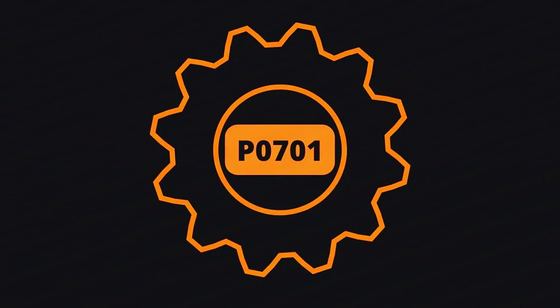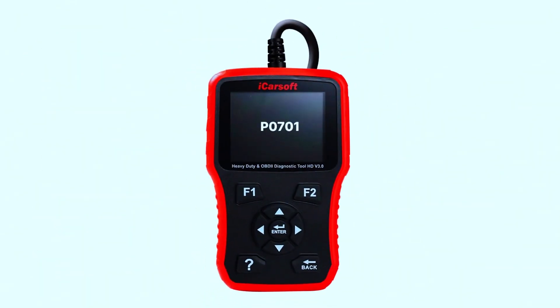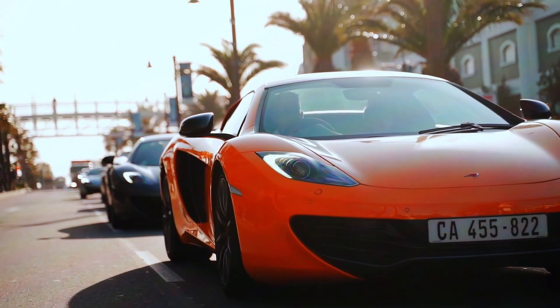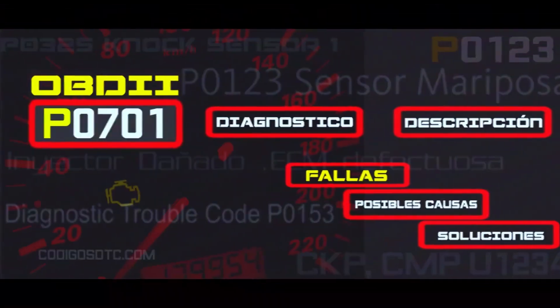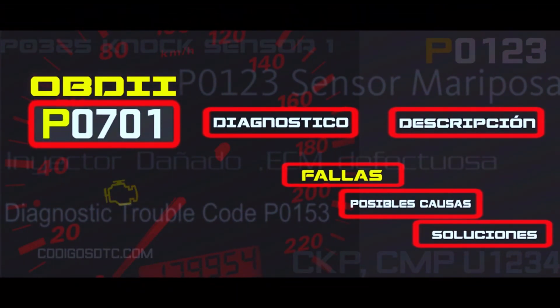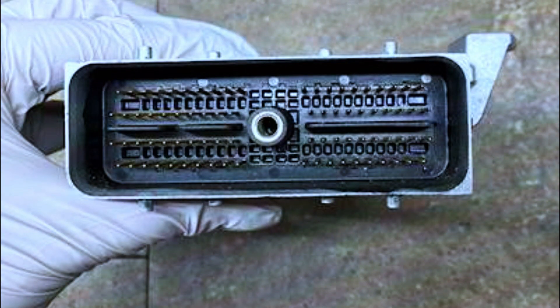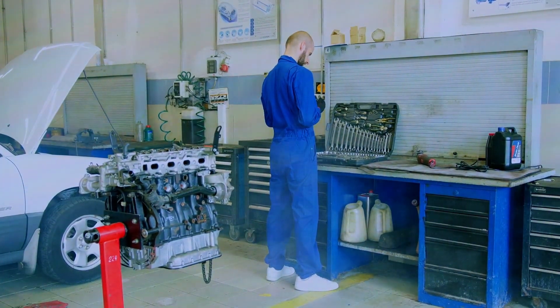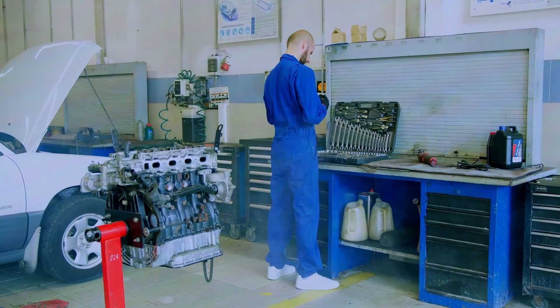Once you've gone through these steps, clear the code with your OBD2 scanner and take the car for a test drive. If the P0701 code doesn't return, congratulations — you've fixed the problem. If it does, further diagnostics may be required and it might be time to consult a professional mechanic.